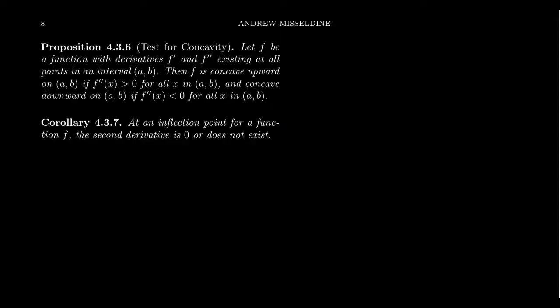Let's summarize with what we call the test of concavity. Let f be a function with derivatives f prime and f double prime existing at all points in the interval a to b. If the second derivative is positive, f is concave upward — because an increasing derivative means you're curving upward. The function will be concave downward if the second derivative is negative. At an inflection point, the second derivative is zero or does not exist. Inflection points occur at the critical numbers of the first derivative.